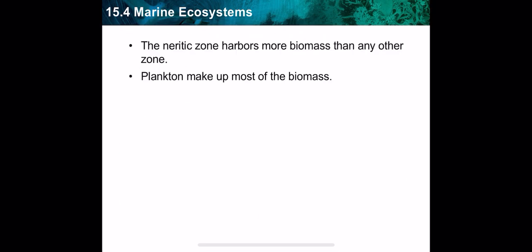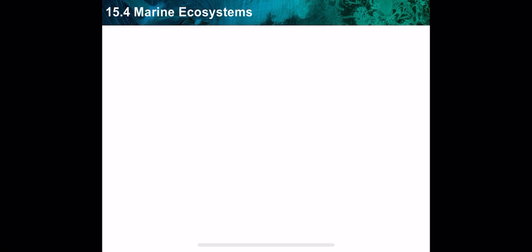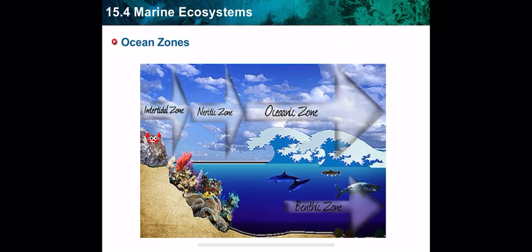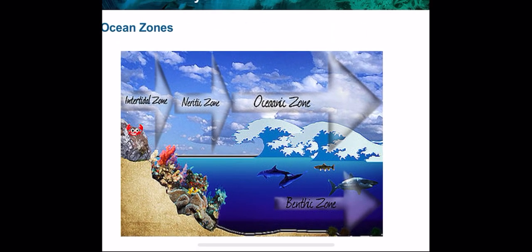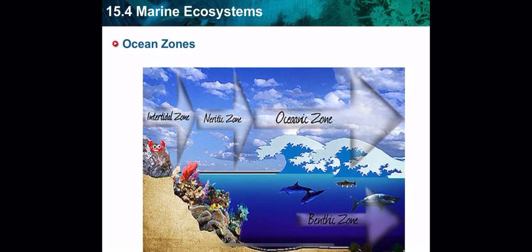Let's talk about the bathyal zone. This is where we can find sharks and large fish. It is a turbid zone due to the accumulation of salts, which are among the components of the sediment on the ocean floor.